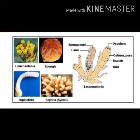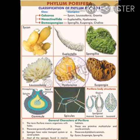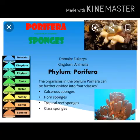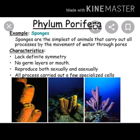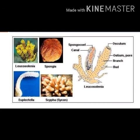Phylum Porifera — the pore bearers — are the sponges. Porifera are the simplest multicellular animals and their body consists of a hollow tube. There is no single mouth, but many pores or canals are present. Examples include Sycon and the bath sponge. Water enters the body through pores in the body wall.